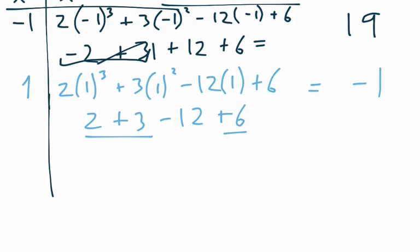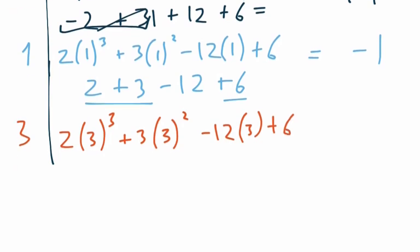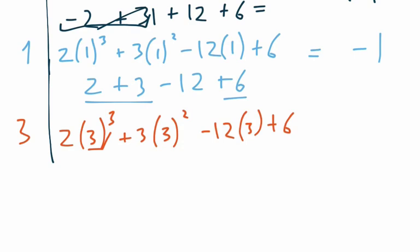And then the last point is 3. So we're going to have 2 times 3 cubed plus 3 times 3 squared minus 12 times 3 plus 6. And that's going to give us 3 cubed is 27 and 2 times 27 is 54.